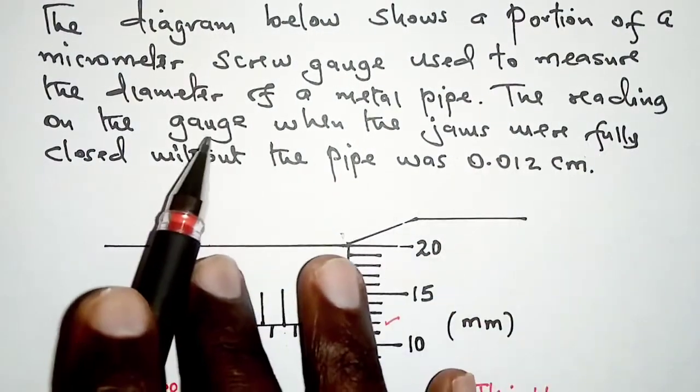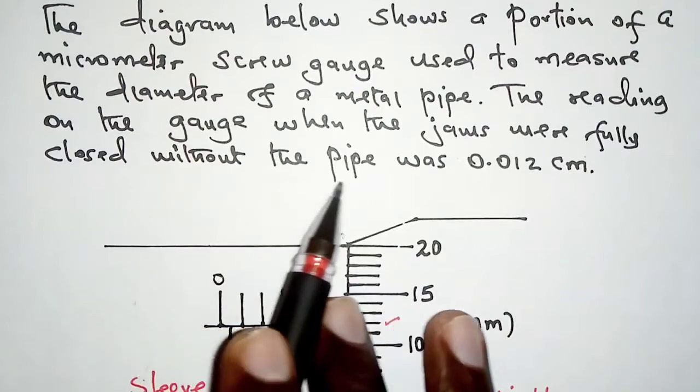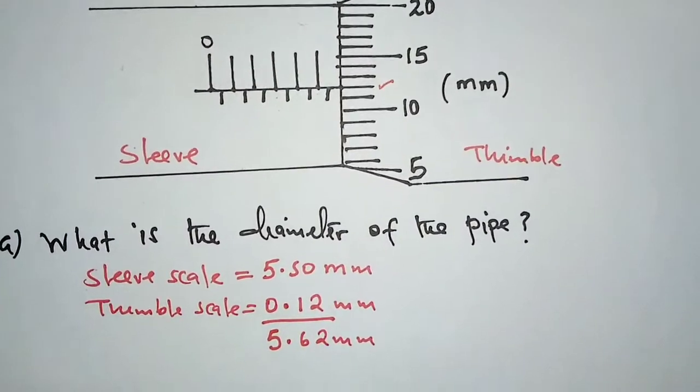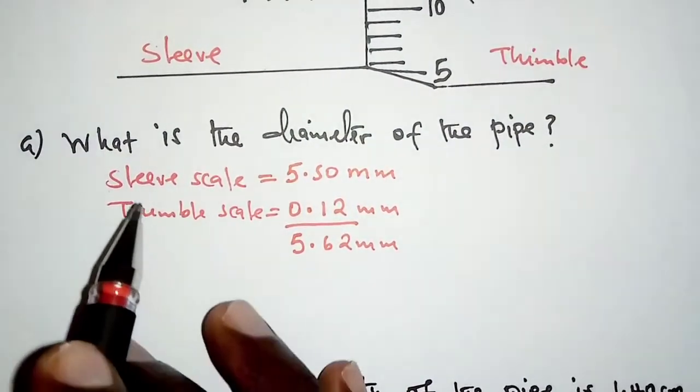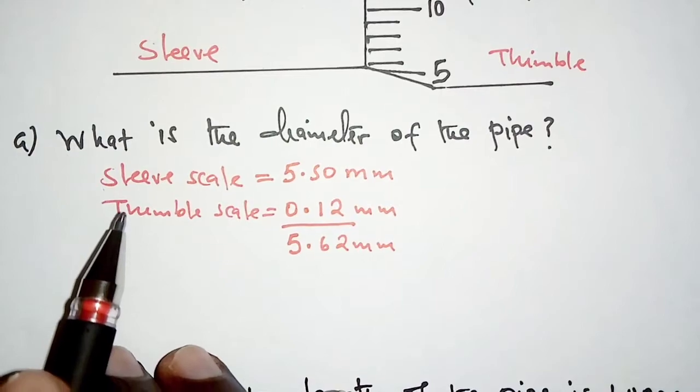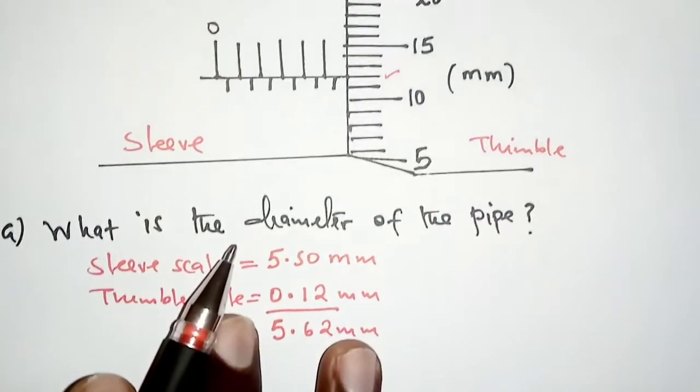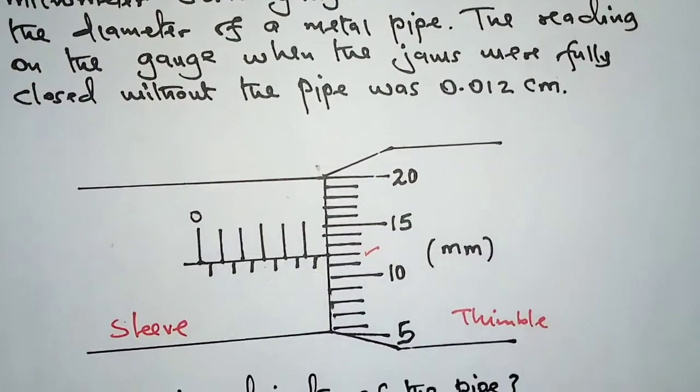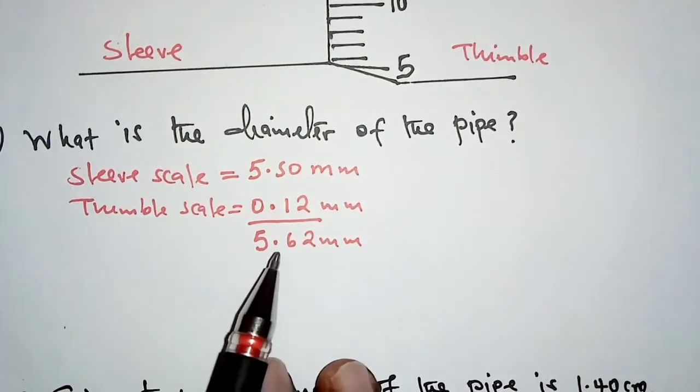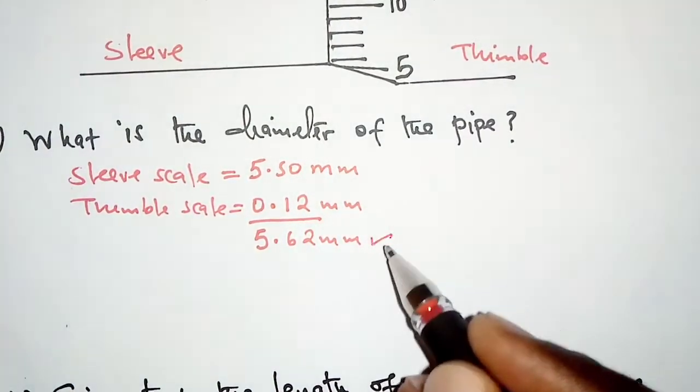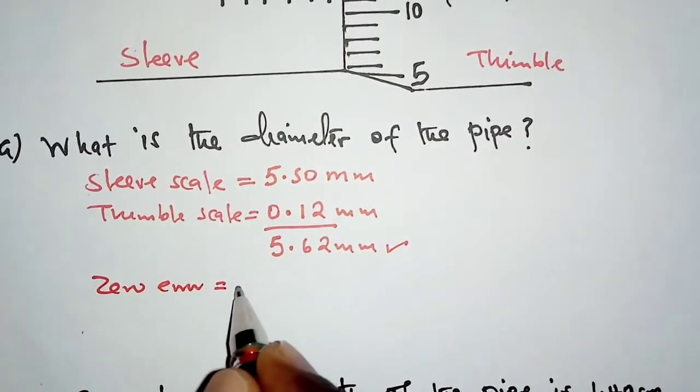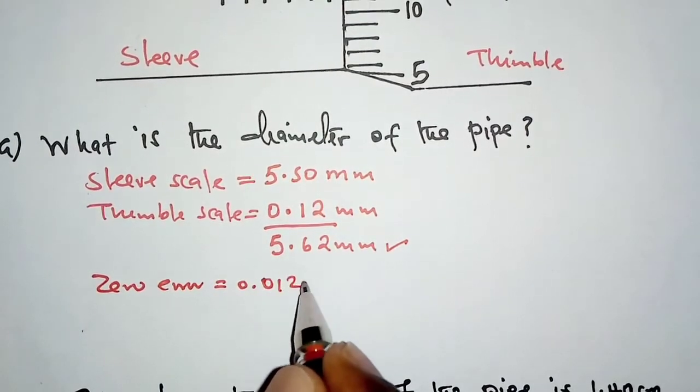We're told that the reading on the gauge when the jaws were fully closed without the pipe was 0.012 centimeters. We need to take note that that is the zero error. If we have the jaws closed without an object between the jaws, the reading we take there should be the zero error. For this case, the zero error is positive, so we have the zero error of 0.012 centimeters.